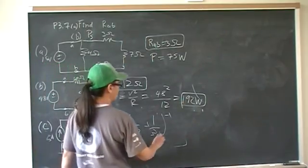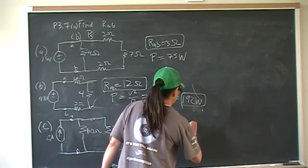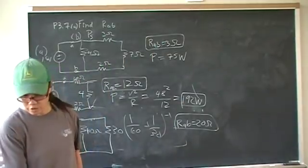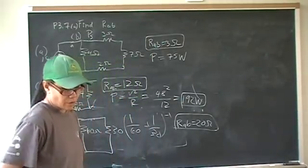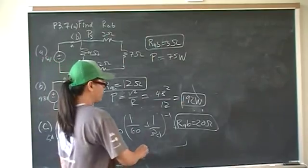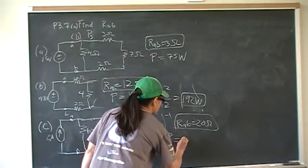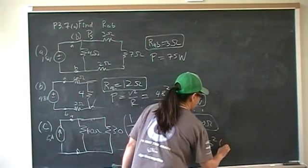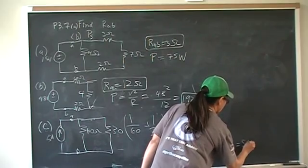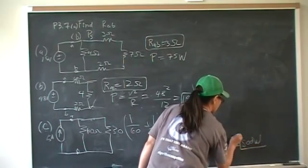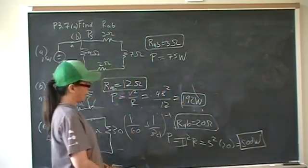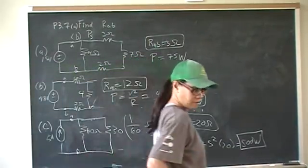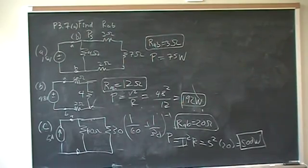And so RAB for the third one is 20 ohms, and power P is equal to I squared R, so that's going to be 5 squared times 20, which is 500 watts. Okay, and that is problem number 7.